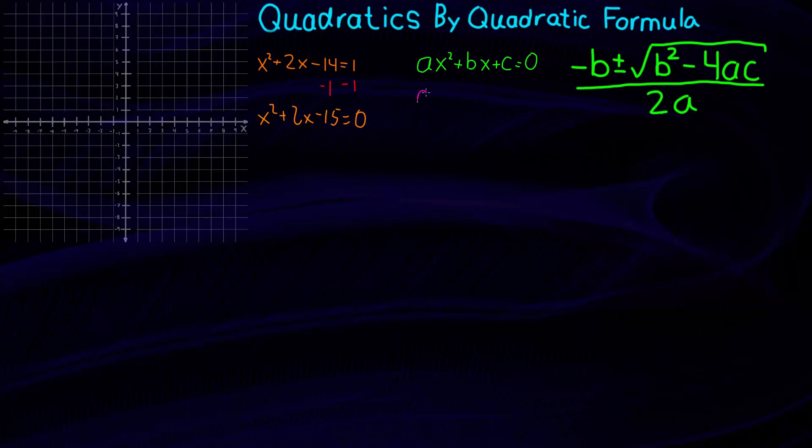So let's find the values. We've got a is 1, b is 2, and c is negative 15. Now it's important that we watch our signs and keep treating c as negative 15 throughout this process.